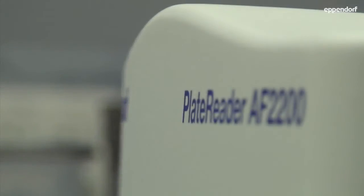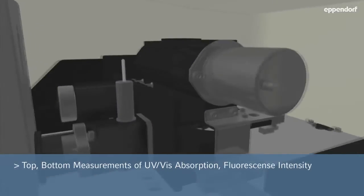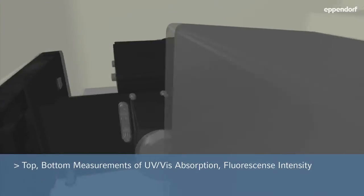Inside the Eppendorf plate reader AF2200, several key features ensure flawless results. The plate reader offers top and bottom measurements of UV-VIZ absorption and fluorescence intensity.